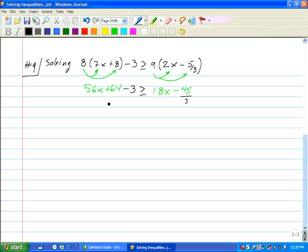So far, I have 56x. Then I am going to combine like terms. 64 minus 3. That will give me a positive 61. Bring down my inequality. Bring down the 18x. And now I will go ahead and divide. 45 divided by 3. That will give you 15.